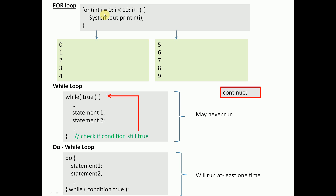It comes in three parts. The first part is executed when we first initialize it — we're going to set an integer i equal to 0. Each time we pass through this loop, we're going to evaluate the middle section: as long as i is less than 10, we're going to continue executing the instruction or series of instructions in its scope. And at the end of this loop each time, we want to increase our i by 1, so i++. It doesn't have to be i++ — it could be i plus 5, depending on whatever you need out of this loop.